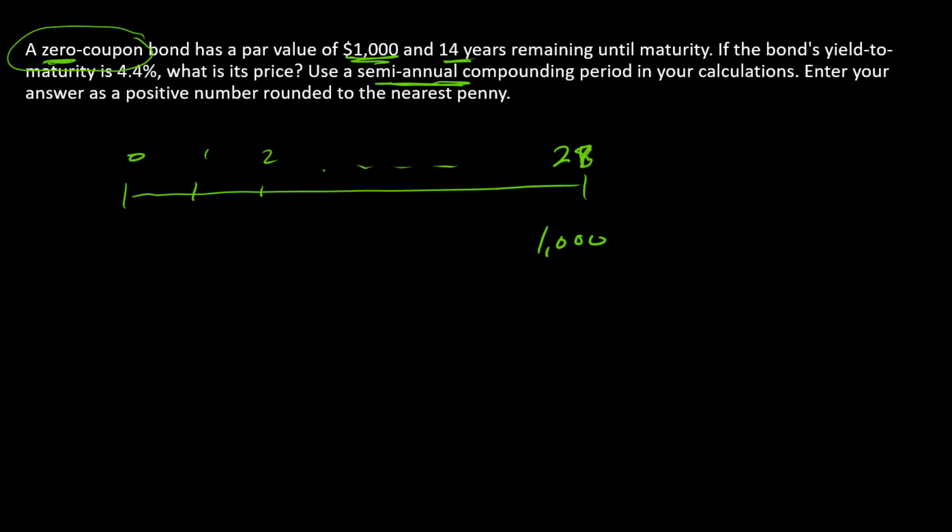And in order to find the price, we just need to find the present value of that $1,000. What discount rate are we going to use? We're going to use the yield to maturity. But again, since we're using semiannual compounding, we need to split that in half to get a semiannual rate. And so we're going to use 2.2%.